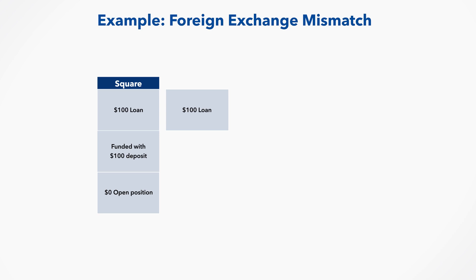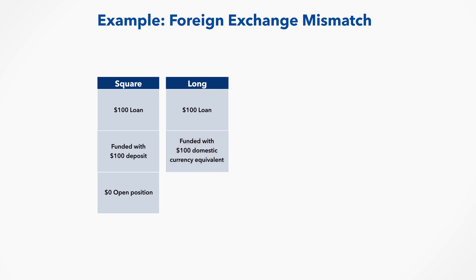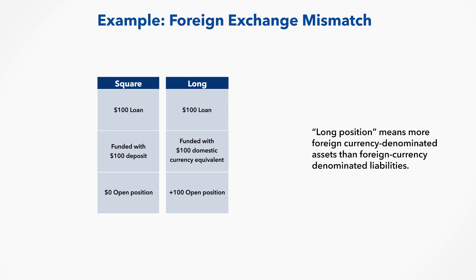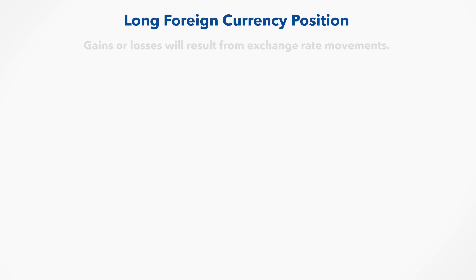The loan could be funded by purchasing $100 using the domestic currency. This results in a long foreign currency position. The bank has $100 more in foreign currency denominated assets than its zero position in foreign currency denominated liabilities. A long position means more foreign currency denominated assets than foreign currency denominated liabilities. With a long foreign currency position, gains or losses will result from exchange rate movements because the bank has more foreign currency denominated assets than liabilities.